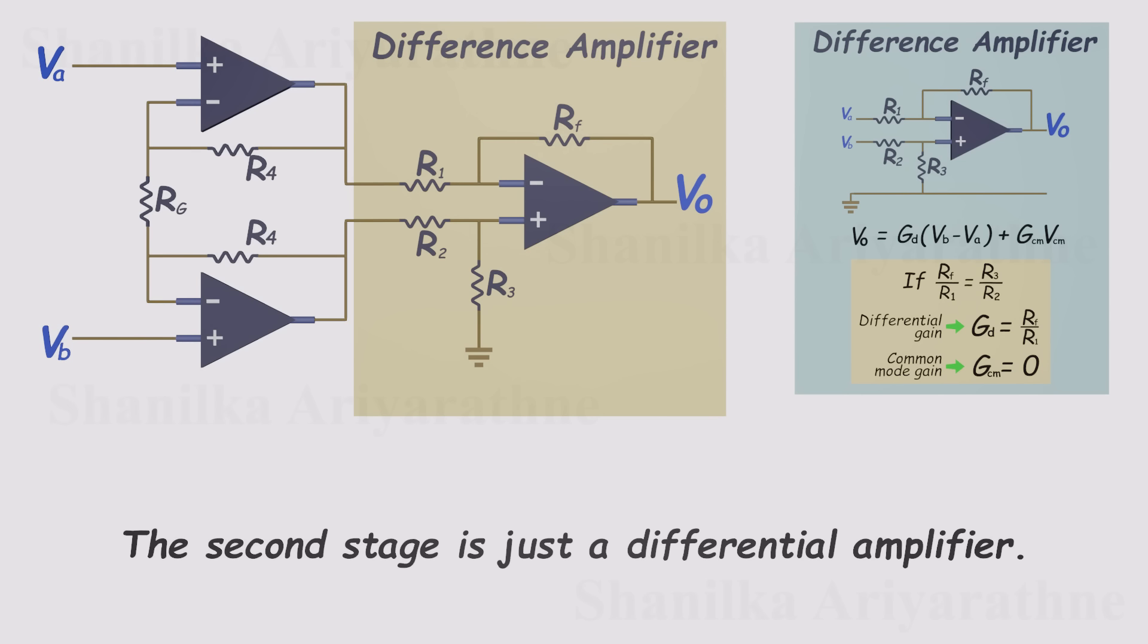Back in our earlier lesson, we saw that if the resistor ratios are perfectly balanced, the circuit cleanly subtracts the two inputs. The differential gain is set by that ratio, and the common mode gain ideally drops to zero.